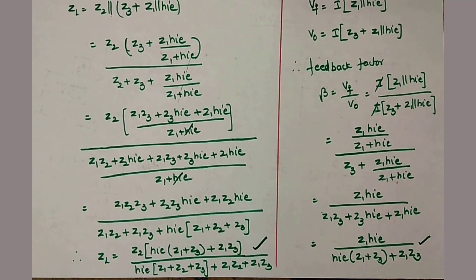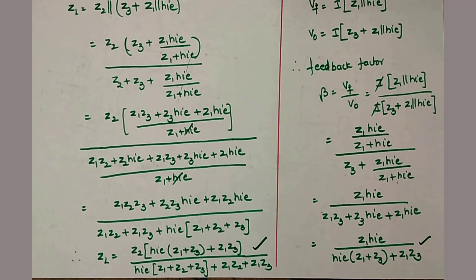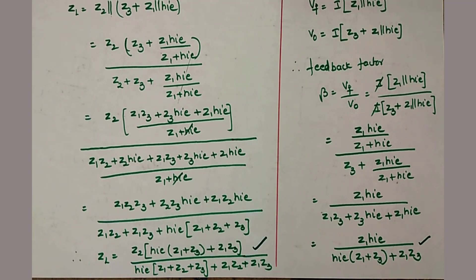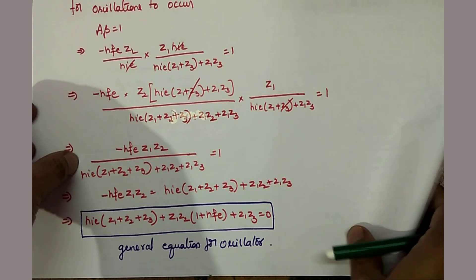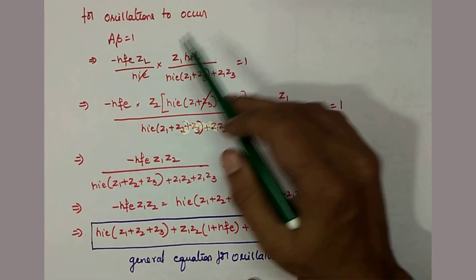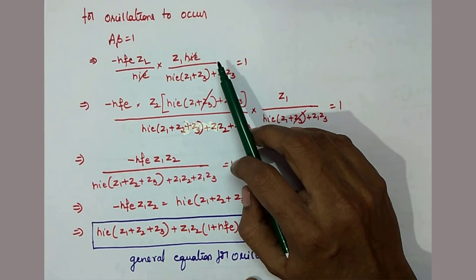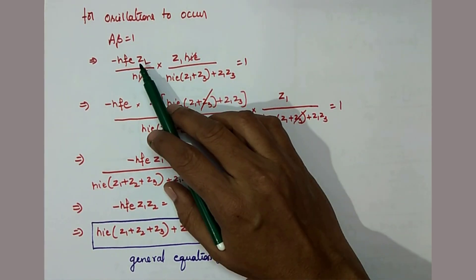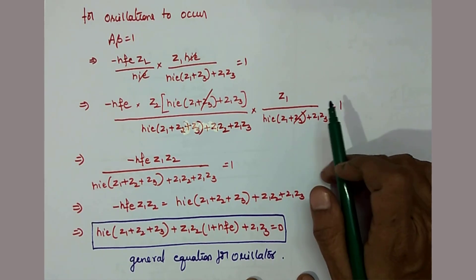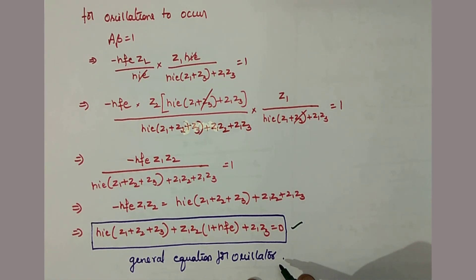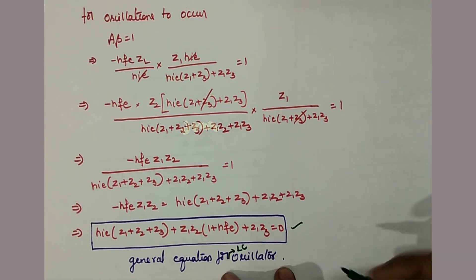Now, the amplifier gain without feedback is A = −HFE × ZL / ZI. For oscillations to occur, the loop gain A·beta must equal 1. Substituting A and beta and setting A·beta = 1, then substituting ZL and simplifying, you arrive at the general equation for LC oscillators. This general equation will be used to analyze the two types of LC oscillators.